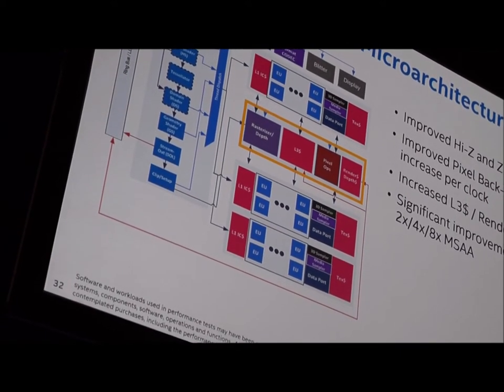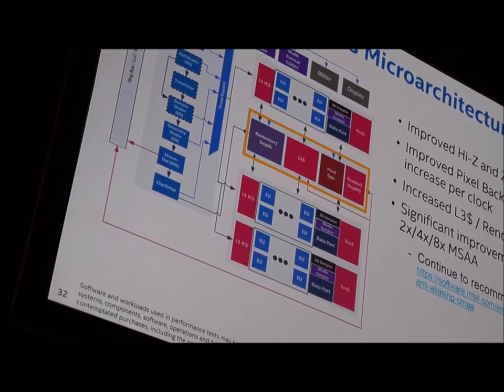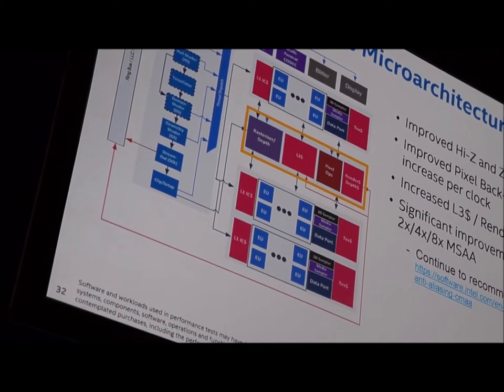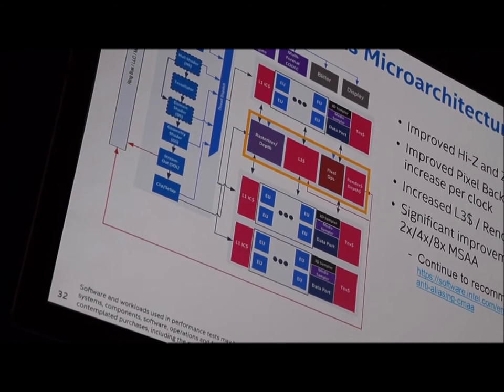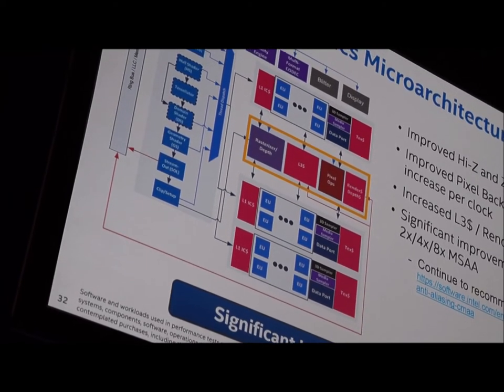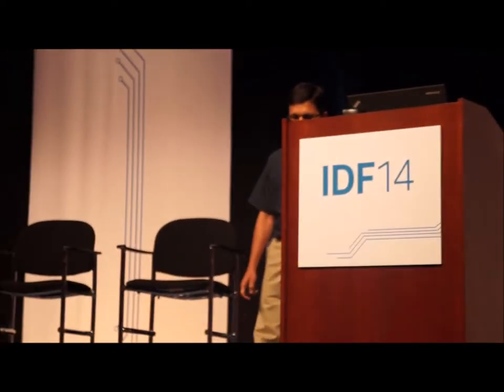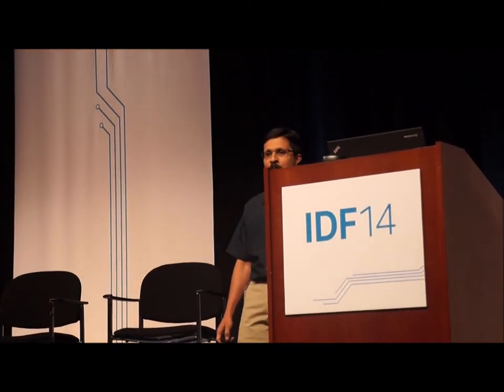MSAA performance has been improved for 2x, 4x, and 8x MSAA, though Intel continues to recommend post-processing techniques like CMAA because at these power levels CMAA offers a better quality-performance trade-off compared to hardware MSAA. Summing up, significant microarchitecture improvements in the 14nm generation are expected to perform well across a wide variety of benchmarks; in the Y series, approximately 40% improvement has been observed across a variety of games and benchmarks compared to the prior generation.